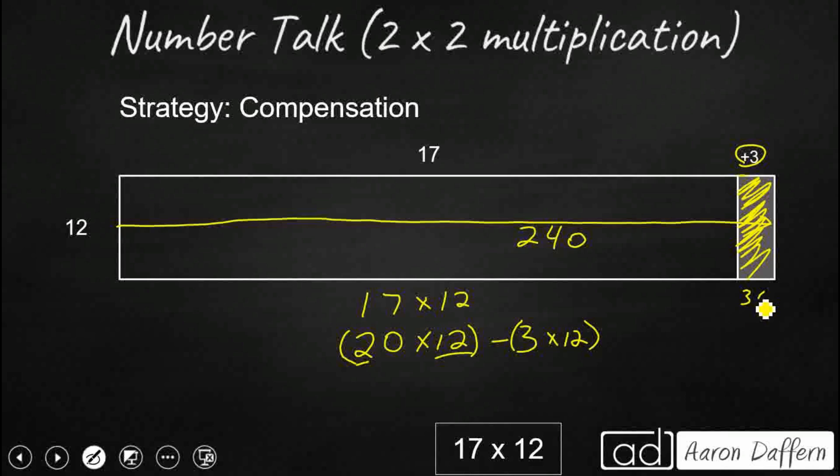And that's really what that is. That's that 36. 240 minus 36, so that gets us 4 away from 200. So we're going to get 204. So sometimes we can use compensation.